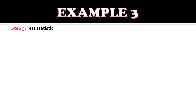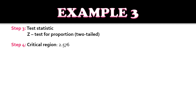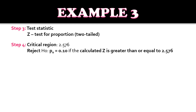For step three, we use the Z-test for proportion with a two-tailed test. For step four, with significance level alpha 0.01 under two-tailed, the critical value is 2.576. We would reject the null hypothesis — population proportion equals 0.10 — if the calculated Z is greater than or equal to 2.576.